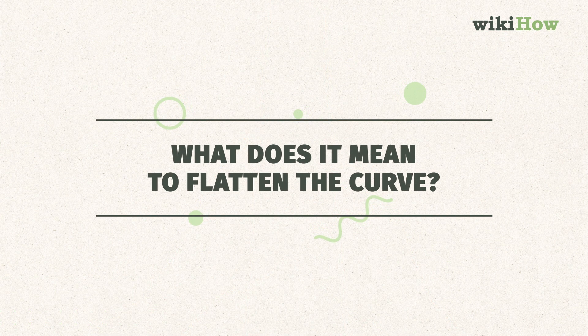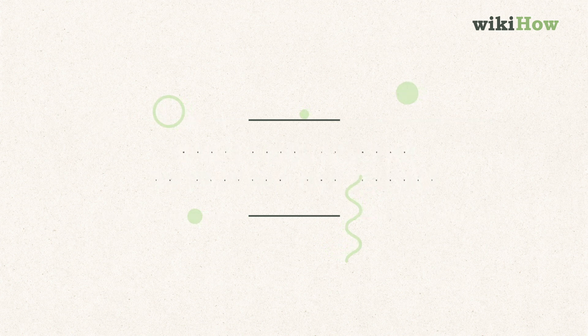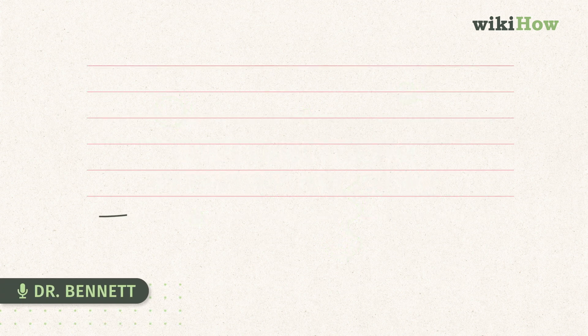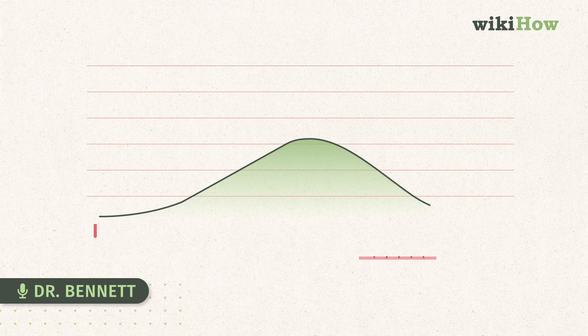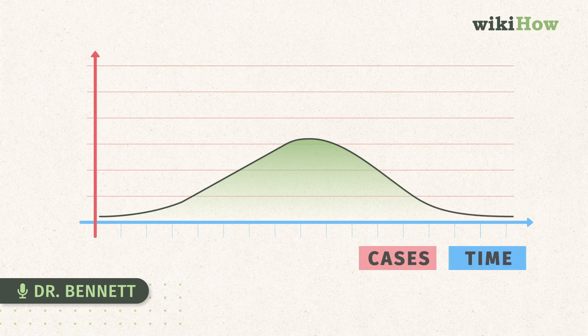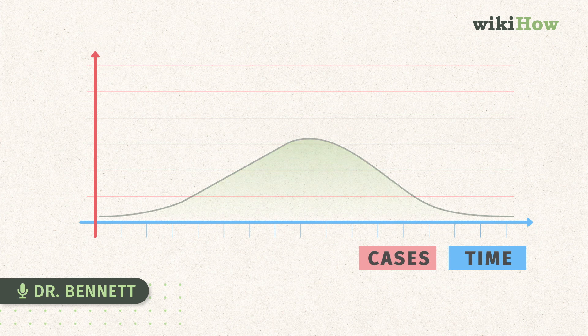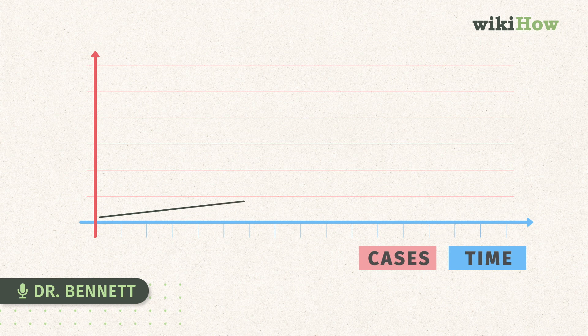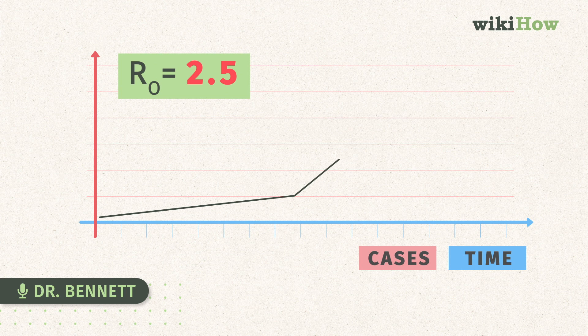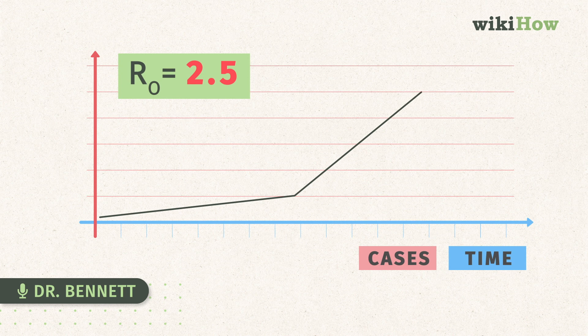What does it mean to flatten the curve? The curve actually refers to the change in daily new cases over time during the course of an epidemic. It starts out with very few daily new cases, as the epidemic is just first beginning. And then as the growth rate increases, the reproductive number of the virus translates into many, many new cases deriving from every one case. You see exponential growth in the daily new cases.